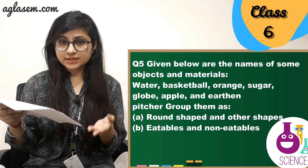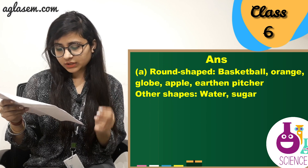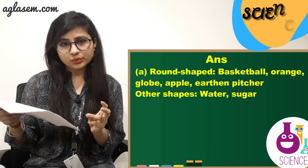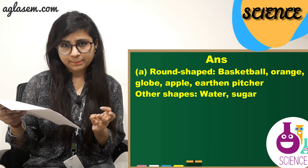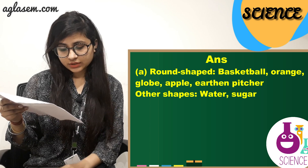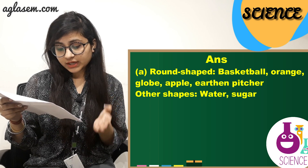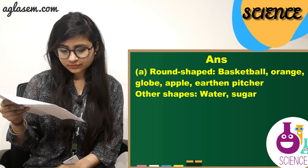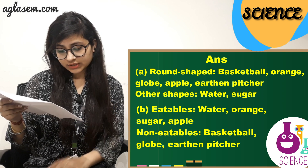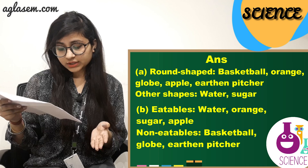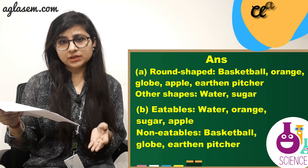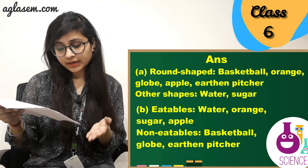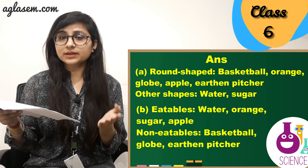The answer is: A. Round shape — basketball, orange, globe, apple, and earthen pitcher. Other shapes — water and sugar. B. Eatables — water, orange, sugar, apple. Non-eatables — basketball, globe, and earthen pitcher.